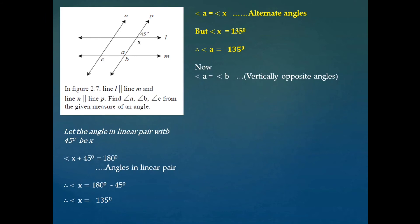Next, angle A is equal to angle B — again these two are vertically opposite angles, and we know that vertically opposite angles are congruent. So since angle A is 135 degrees, angle B is also 135 degrees.